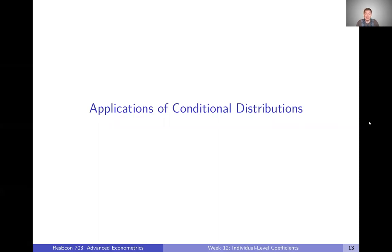Oftentimes it's going to be easier to work with specific statistics that are based on that conditional distribution. It's nice to have this concept of what the conditional distribution is, but we're often going to be doing things with it. In the next video — the final video for this week — we're going to talk about some of the things we can actually do with this conditional distribution, which will be more useful than just thinking about the conditional distribution itself. We'll talk about some of these applications of conditional distributions in the next video.